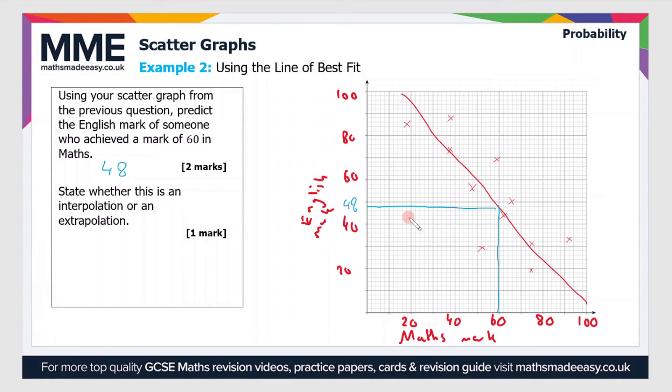If it was outside of the range, for example, if we were estimating the mark in English of someone who scored 10 in maths, we'd draw a line up at 10. We see that this is outside the range of all the data points which were given, and so the line of best fit would not be a particularly useful tool to make predictions. This would be an extrapolation.